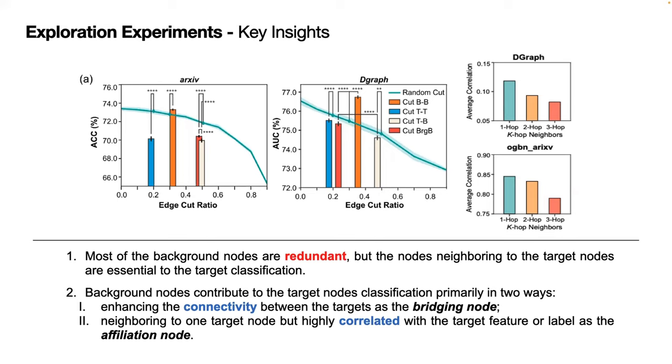The first is enhancing the connectivity between the target nodes as the bridging node. And the second is neighboring to one target node, but highly correlated with the target features as the affiliation node.